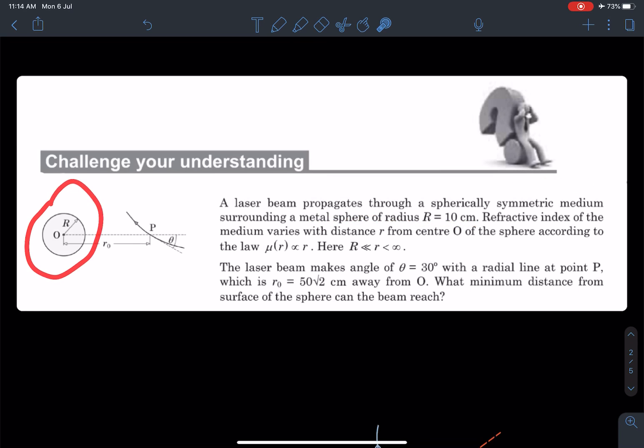This is the metal sphere as you can see here. Refractive index of the medium varies with distance r from the center O of the sphere according to the law μ(r) is proportional to r, and it exists outside the sphere. That's why the inequality r to infinity is given.